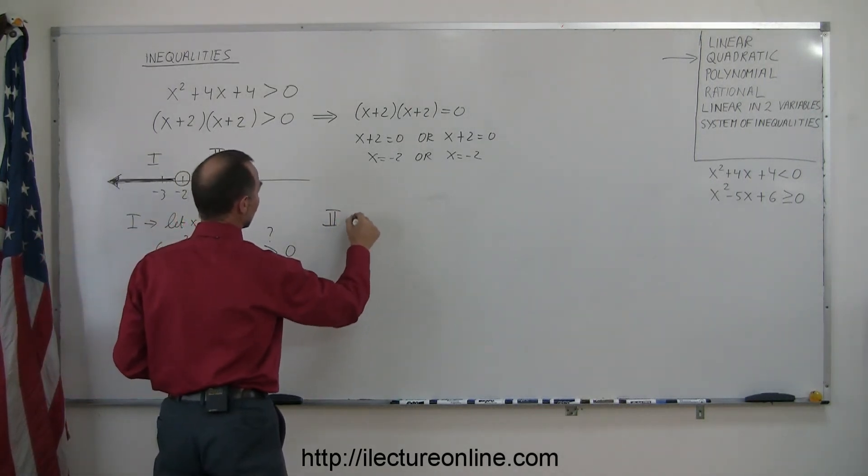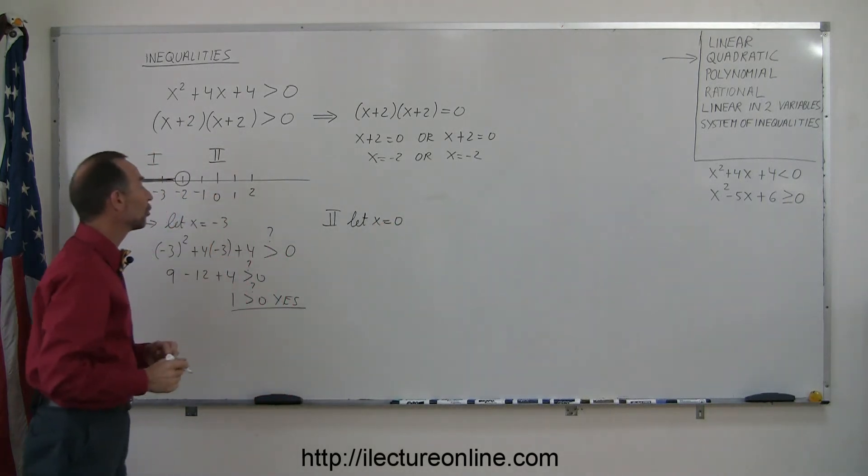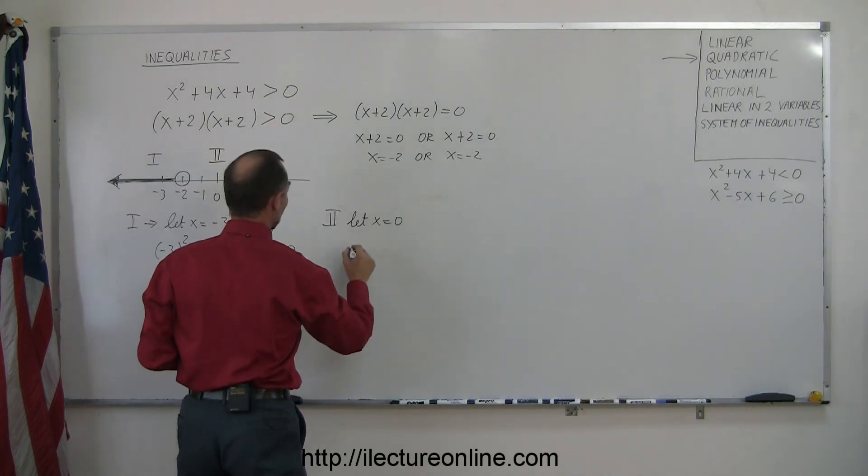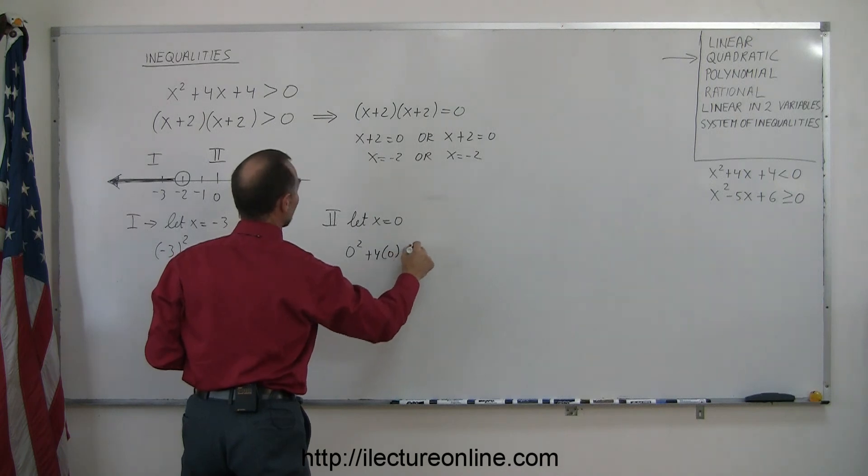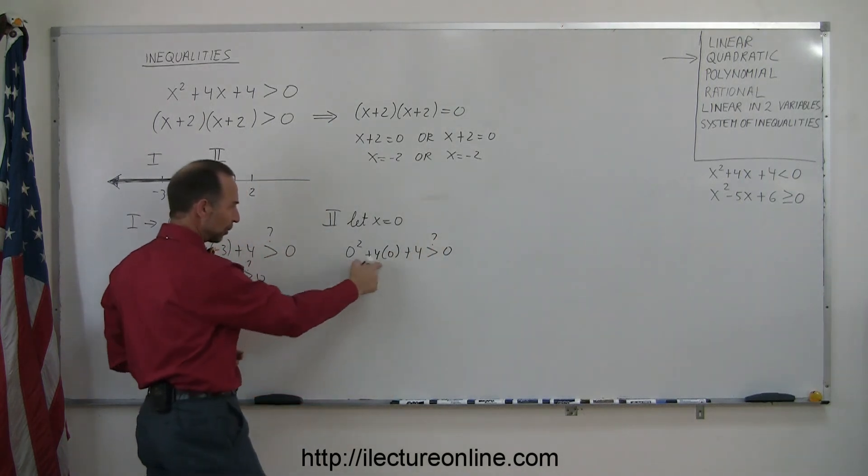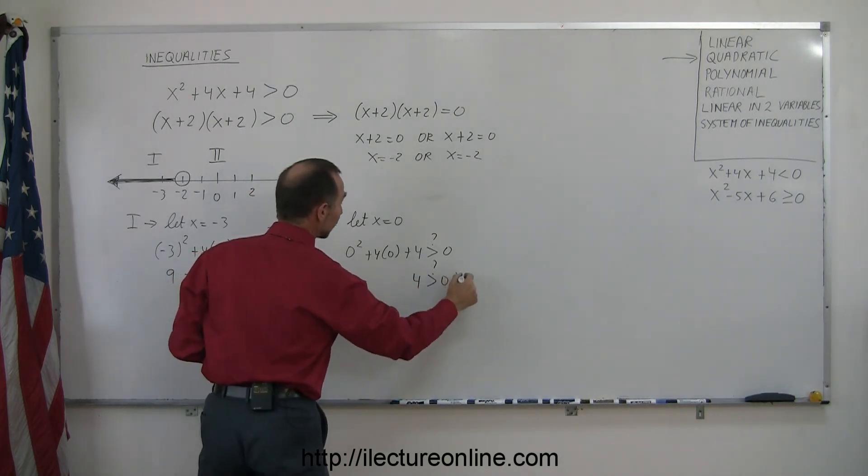And so for region two, we're going to let x = 0, because zero lies in region two. We plug zero in the inequality to see if that makes that a true statement, so we have 0² + 4(0) + 4. Is that greater than zero? Of course, zero plus zero drops out, so four greater than zero? And the answer is yes again.